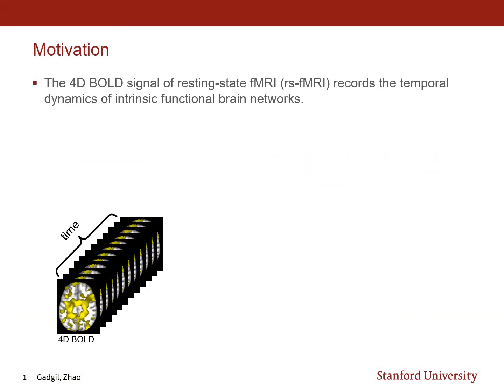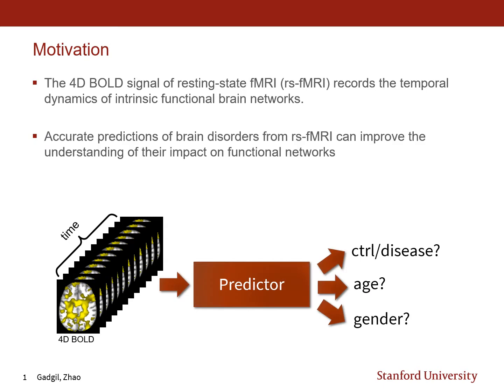Resting state functional MRI is a 4D BOLD signal which records the temporal dynamics of intrinsic functional brain networks. Prediction from this BOLD signal, such as gender, age, and control or disease, can help in characterizing brain disorders which often impact the functional networks of the brain.